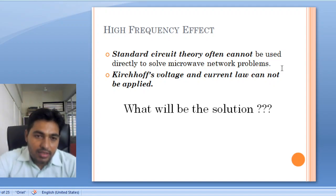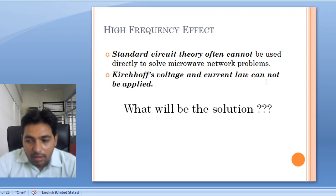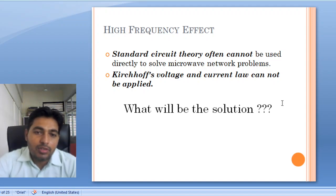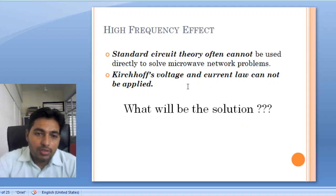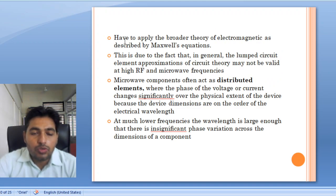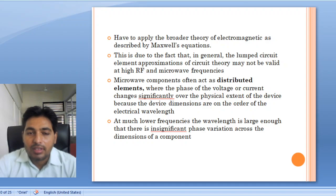Since phase and amplitude are changing, we cannot apply Kirchhoff's voltage and current law in microwave circuits. So how can we find voltage and current? The solution is we will use more fundamental quantities than voltage and current. The fundamental quantities are field quantities like electric field and magnetic field, and we will use Maxwell's equations to find the solution.